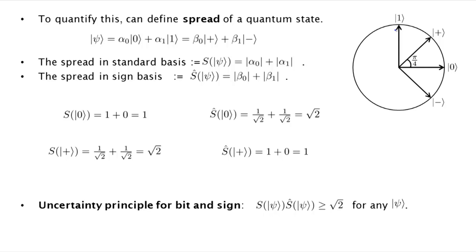And so what this uncertainty principle for bit and sign says is that if you look at the spread in the standard basis and multiplied by the spread in the sign basis of any qubit, then this product is at least square root 2. Which means that both of these values cannot simultaneously be 1. At least one of them, so either this must be at least square root of square root of 2, so fourth root of 2, or this must be at least fourth root of 2. So that's the sense in which it's saying that you must be uncertain about either one or the other.